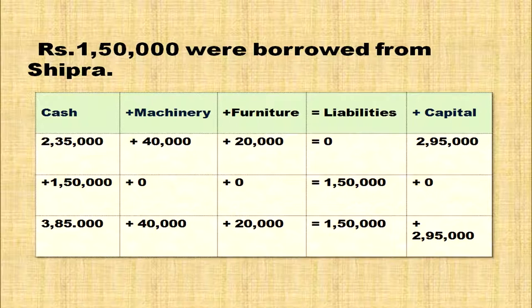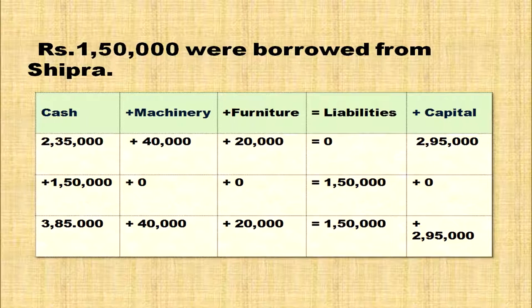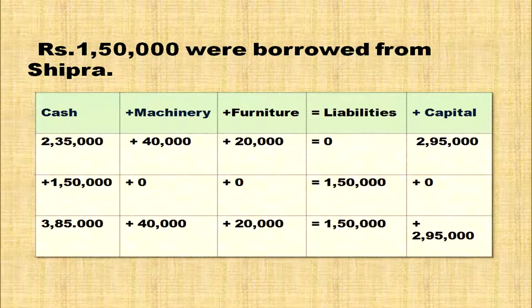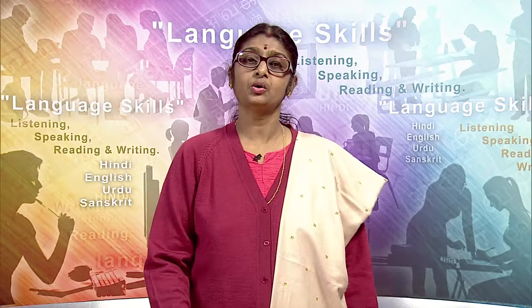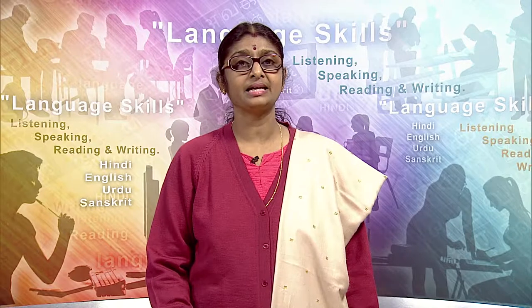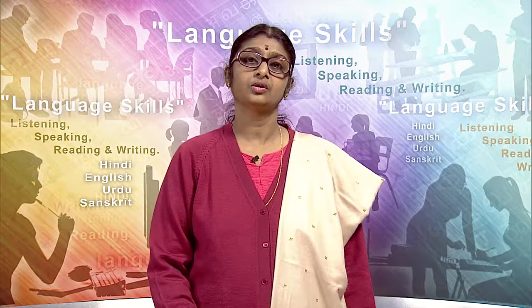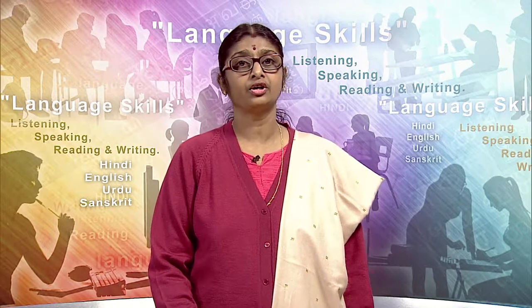Total cash will come to 2,35,000 plus 1,50,000 equals 3,85,000. On the asset side: 3,85,000 plus machinery 40,000 plus furniture 20,000. On the liability side, liability has increased by 1,50,000, and capital remains 2,95,000. So 2,95,000 plus 1,50,000 gives 4,45,000 on both sides. Accounting equation is satisfied.